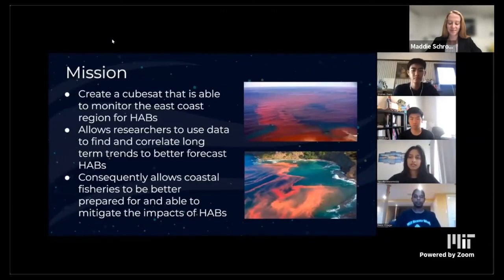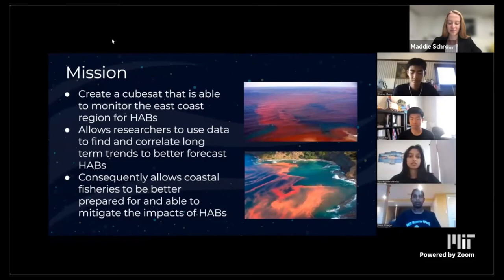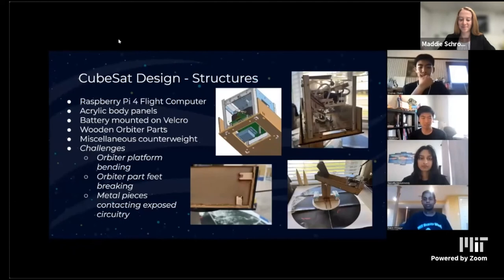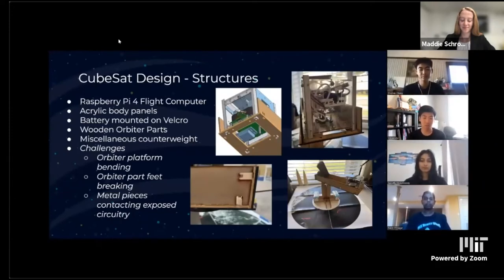Our mission was to create a CubeSat that can detect these red algae blooms on the eastern coast of the United States. By completing this mission, we hope to allow researchers to use this data to predict trends and better forecast them, and have coastal fisheries be better prepared and mitigate the effects. In this project, we simulated such a mission on an orbiter, using a Raspberry Pi 4 flight computer, acrylic body panels, a battery mounted on Velcro, and an orbiter made of wooden pieces.